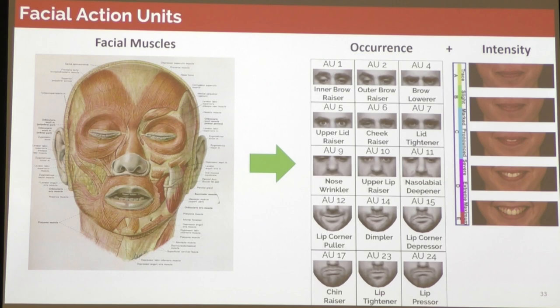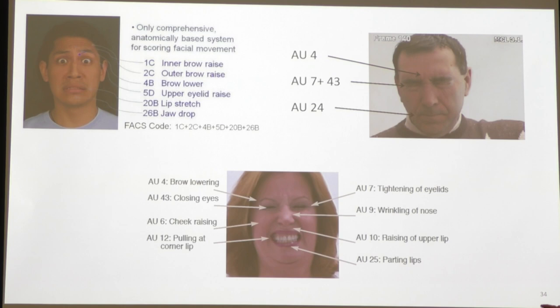After measuring all the action units, you can combine them to get an interpretation. This is a sign-based system — it doesn't tell you directly about emotional state, but you can combine action units to describe emotional expressions like happiness or fear. You can also describe intensity of pain. Each action unit has a five-point intensity scale from trace level to extreme, A to E.